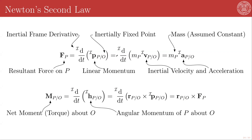We now have the statement of Newton's second law. There is also an angular version, where we cross all components with the position vector of our particle with respect to point O. The angular form of Newton's second law — with no new physics, just vector algebra — tells us that the net moment or torque on our particle about O equals the inertial time derivative of the inertial angular momentum about O. That quantity is defined as the position of P with respect to O crossed with the linear momentum of P. These are the linear momentum balance and the angular momentum balance.